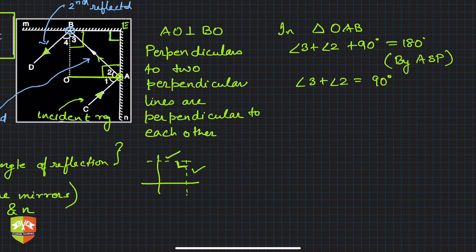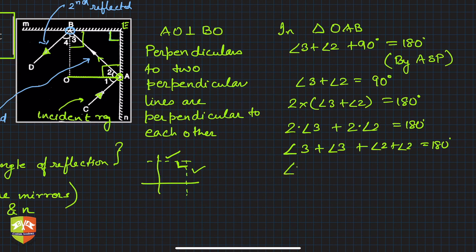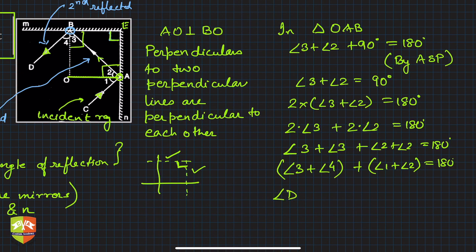If we double both sides: 2(angle 3 + angle 2) = 180°, which gives (angle 3 + angle 3) + (angle 2 + angle 2) = 180°. Since angle 3 = angle 4 and angle 1 = angle 2, we can replace to get angle 4 + angle 3 + angle 1 + angle 2 = 180°, that is angle DBA + angle CAB = 180°.